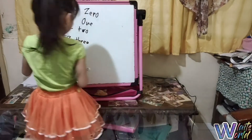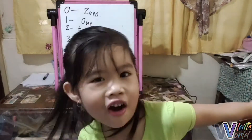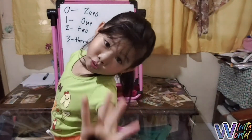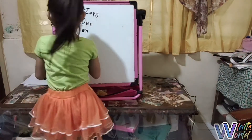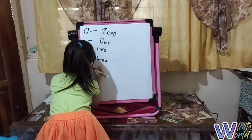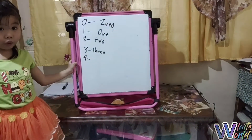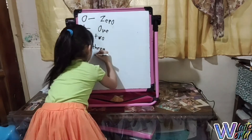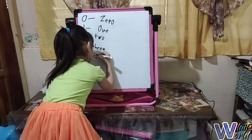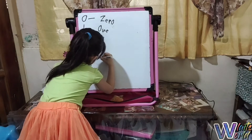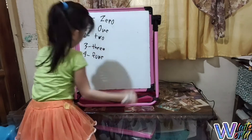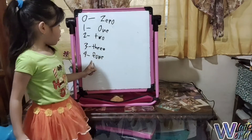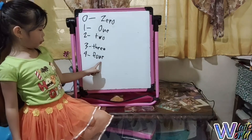And number four. Number four is like this — that's the number. And this is the number four. That's the spelling of four: F-O-U-R.